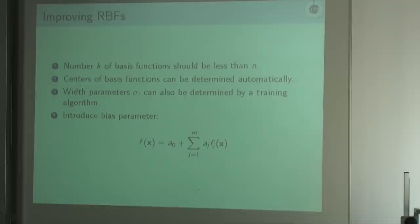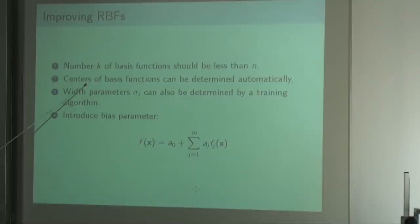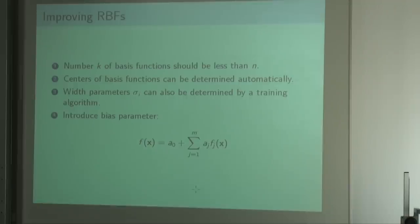What we want is that the number of basis functions should be less than n. But now we lose the rule of thumb of putting a basis function at every data point. The question is: where should we put these few radial basis functions? Maybe we have 10,000 points but want to use only 25 basis functions — where should we put the centers? There are methods for determining these centers automatically. Also, the width parameters sigma_i can be made individual, though the problem doesn't become easier.